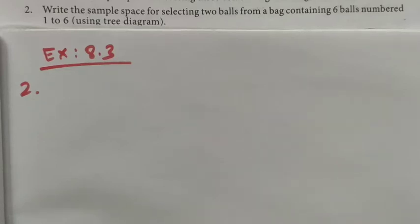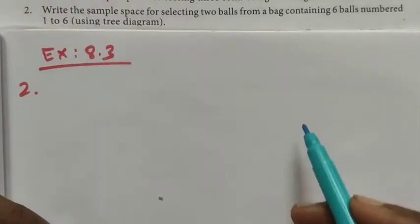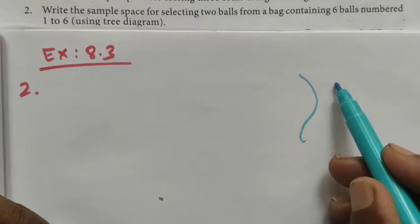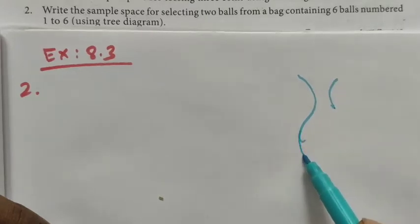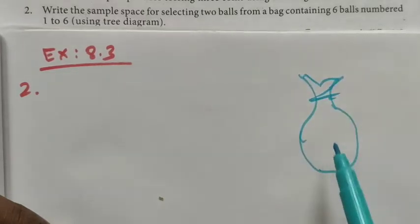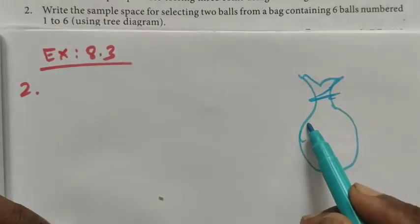Hi students, Class 10, Exercise Number 8.3, Question Number 2: Write the sample space for selecting two balls from a bag containing six balls numbered 1 to 6 using a tree diagram. Here we have a bag that contains six balls.